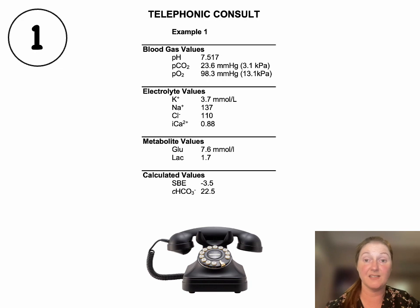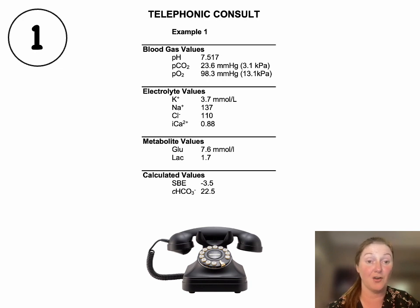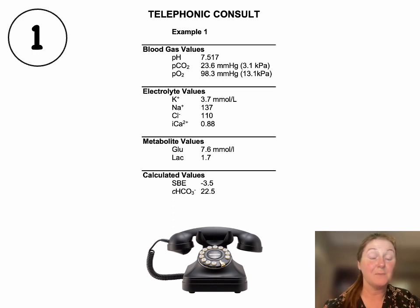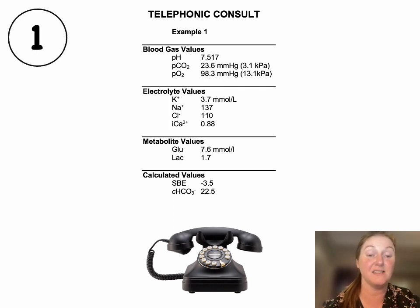Looking at oxygenation: the PO2 is 98.3, so we assume the patient is okay, but this patient very well might be on supplemental oxygen. We don't know the FiO2, so we can't calculate a PF ratio. Ventilation: the PCO2 is 23.6 — the patient is obviously tachypneic, hyperventilating. With regards to acid base, the pH is 7.5 and the PCO2 is down — so this is a respiratory alkalosis. The bicarb is fairly static at 22.5, so this is an acute respiratory alkalosis. There's also a very slight, probably negligible, metabolic acidosis — the base excess is minus 3.5, only very slightly low.